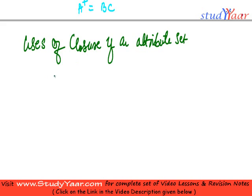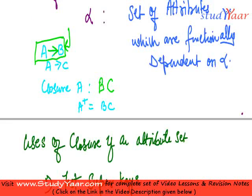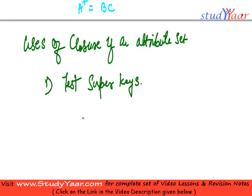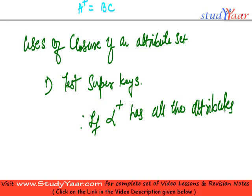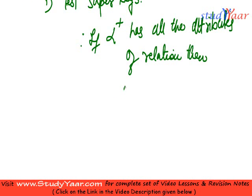First, I say it is used to test super keys. So how do we test super keys? If alpha plus has all the attributes of the relation, then alpha is the super key. Then alpha is super key.